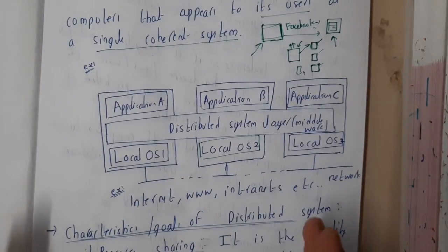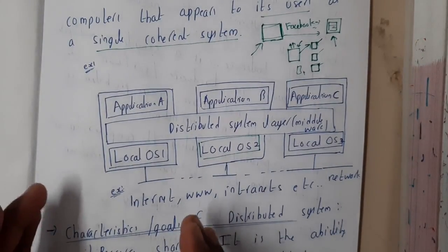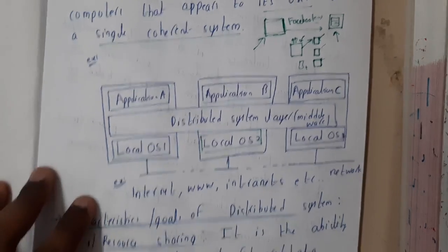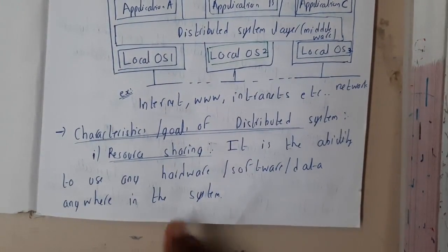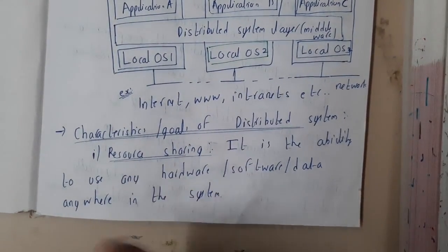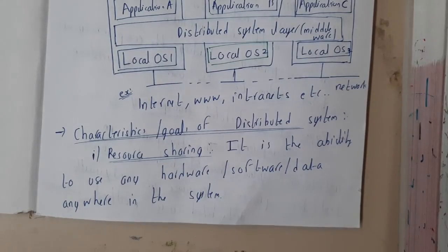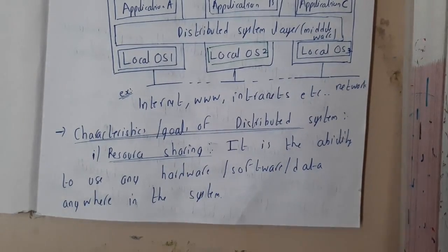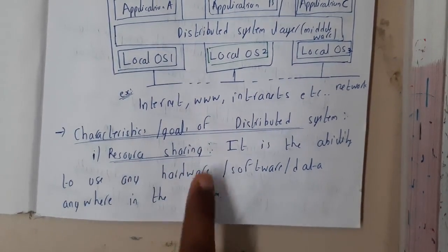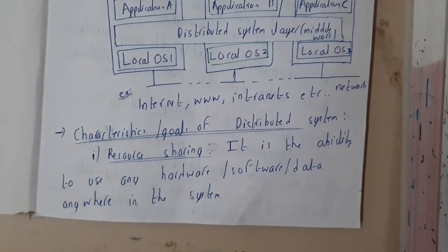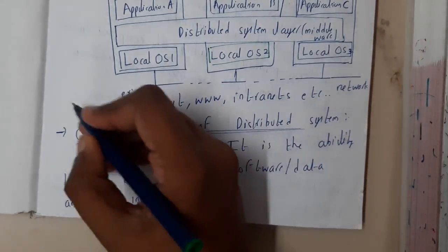Now let us go through the characteristics, also called goals, of a distributed system. Both terms carry the correct meaning. The first characteristic is resource sharing.